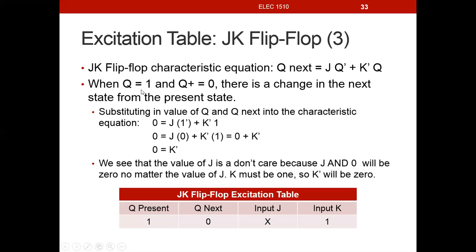The next binary combination is when Q present is 1 and Q next is 0. Substituting in: Q next = 0, Q present = 1. The complement of 1 is 0, so J·0 = 0 regardless of J. We're left with K̄·1 = K̄, so K̄ must equal 0, meaning K must be 1. So J is a don't care and K must be 1 to drive the transition from 1 to 0.